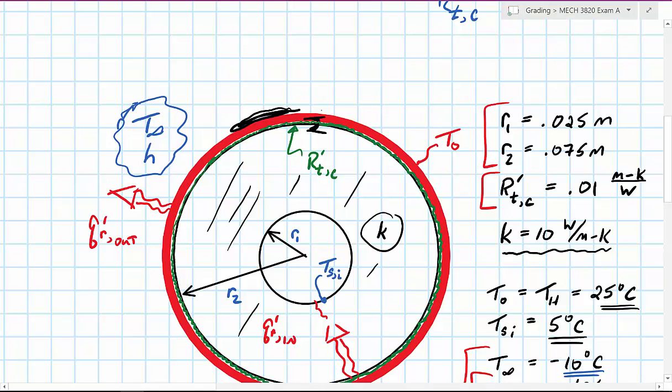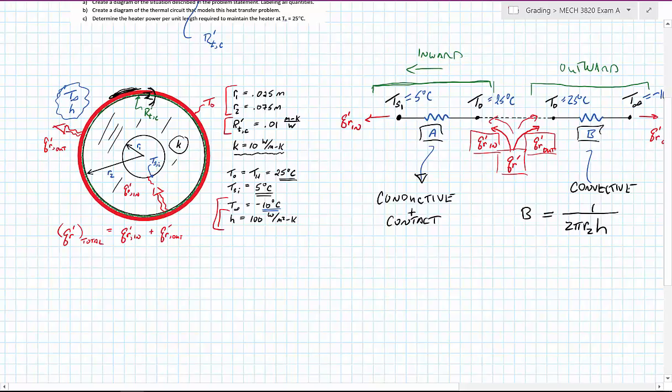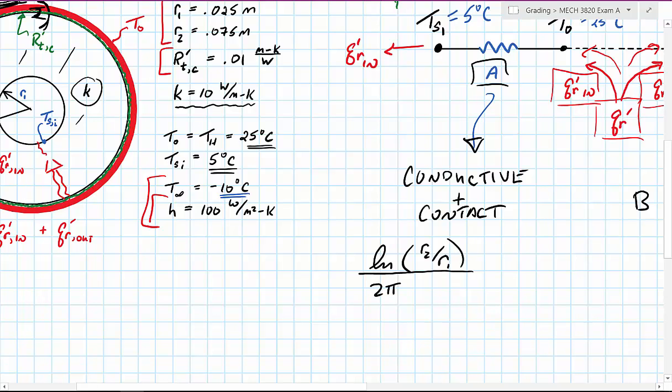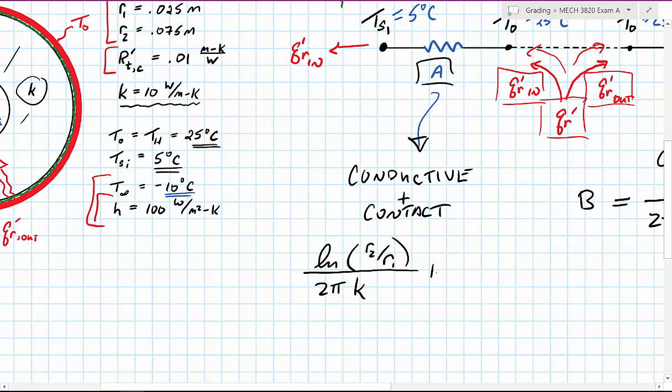But right now it's just going to be a resistance that's added in series to the conductive term. So the conductive term is going to be ln of R_2 over R_1 divided by 2π times the K of the material. And to this we're just going to add in the thermal contact resistance.